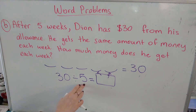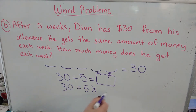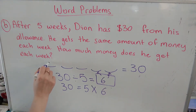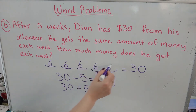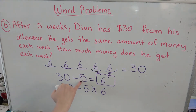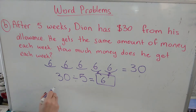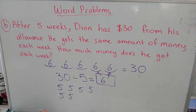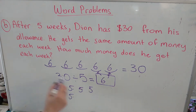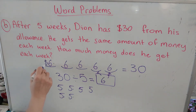30 divided by 5 — you can say what times 5 equals 30. We know 6 times 5 is 30, so 6 goes in here. If you didn't know that, you can count by fives until you reach 30: 5, 10, 15, 20, 25, 30. How many fives did you count? 6. And our answer is 6. So how much money does he get each week? Each week he gets $6.